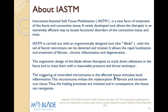IASTM is carried out with an ergonomic design tool — the blade — with which fascial restrictions can be detected and treated. It allows for rapid localization and treatment of fibrosis, chronic inflammation, and degeneration. The ergonomic design allows the therapist to track down adhesions in the fascia and treat them with reasonable pressure and thrust technique. The triggering of controlled microtrauma in the affected tissues stimulates local inflammation — this microtrauma initiates the reabsorption of fibrosis and scar tissue, and the tissues can reorganize.